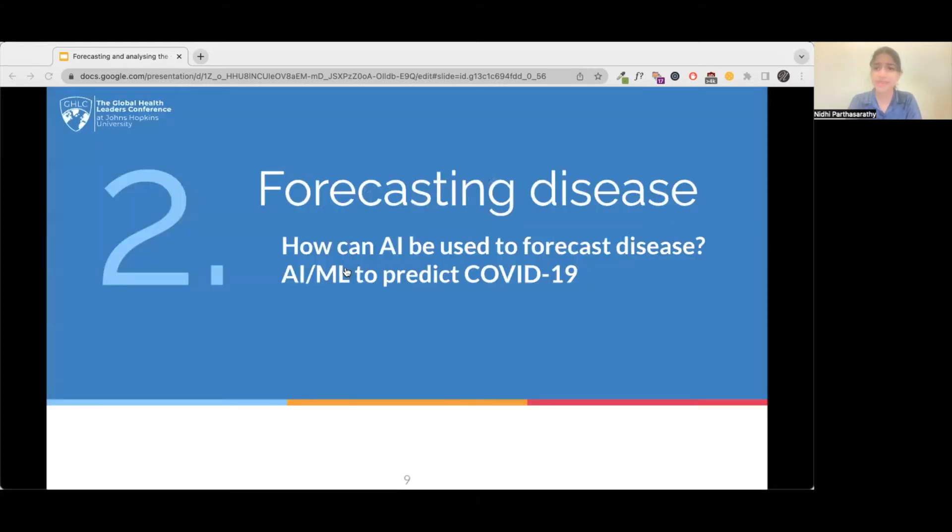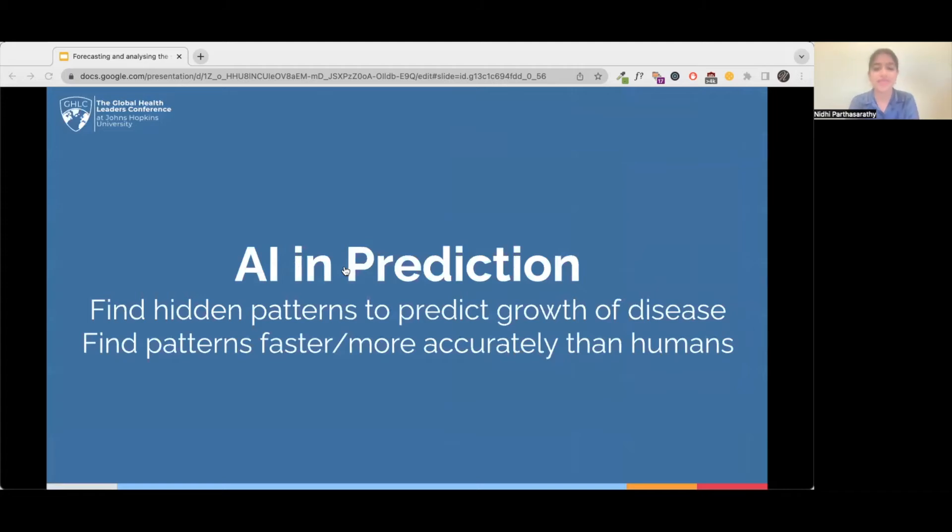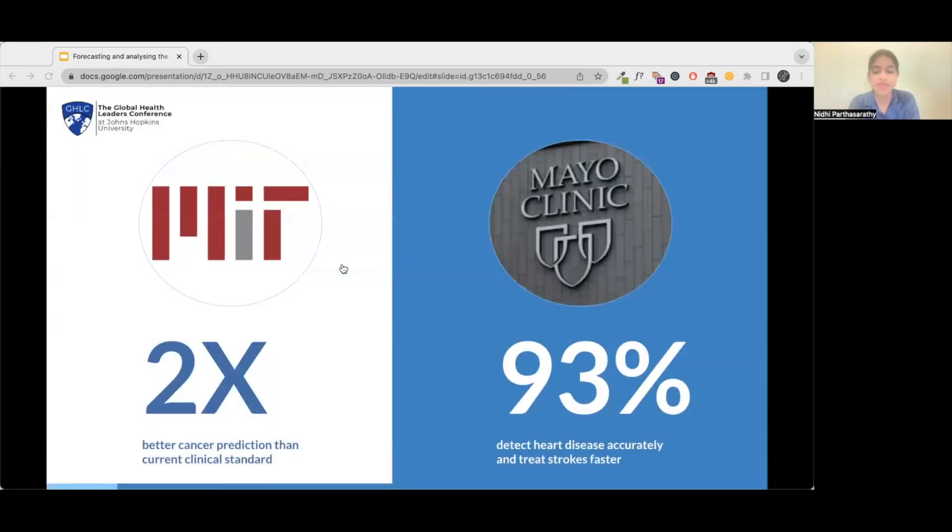Now, let us deep dive into one specific exciting application of AI, namely forecasting diseases. AI in prediction helps in two major ways. First, it allows us to find hidden patterns that can predict the growth of disease, and second, it allows for much better accuracy and speed compared to human approaches. Now, why don't we take a look at just how good this AI can be?